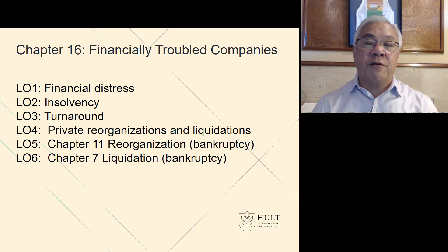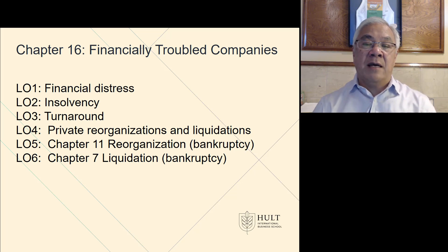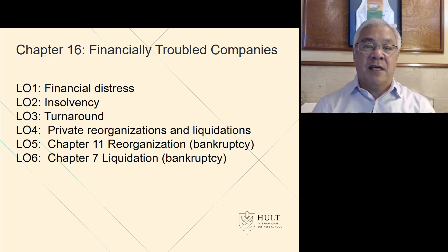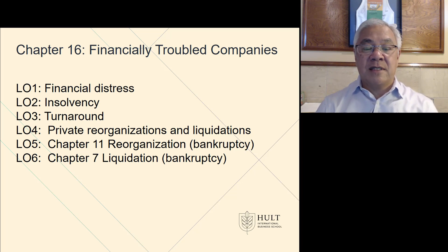Let's look at the learning objectives for Chapter 16. First is what is financial distress and what are the tests that indicate it. Second is what is insolvency, what causes it, and what can we do to avoid it. Third is turnaround — what can we do to turn around a failing company. Fourth is reorganizations. Fifth is Chapter 11, the reorganization where you enter bankruptcy for protection and exit with a newly capitalized company. And last is Chapter 7, the liquidation of the company in an orderly fashion for the protection of the creditors.